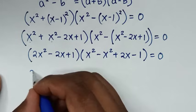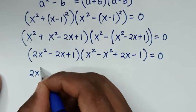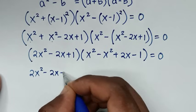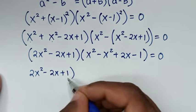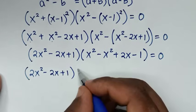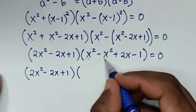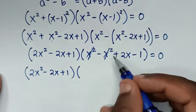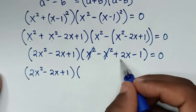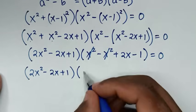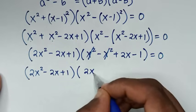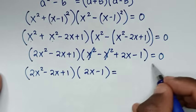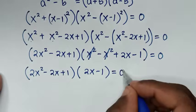So the first factor becomes 2x squared minus 2x plus 1, and in the second factor x squared minus x squared cancels to 0, leaving 2x minus 1. The equation is 2x squared minus 2x plus 1 times 2x minus 1 equals 0.